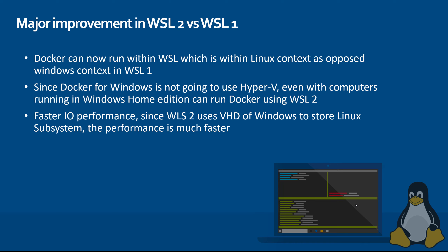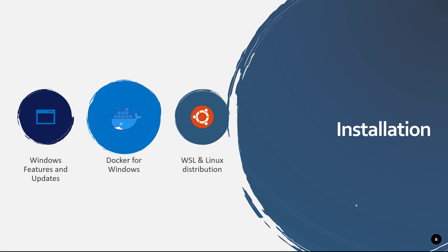Finally, faster IO performance is available in WSL2. Since WSL2 uses a VHD of Windows to store the Linux subsystem, performance is much faster. You can literally see how fast it downloads packages from online, extracts them, and installs applications within WSL itself. The installation part of WSL2 is very straightforward if you have a Windows 10 machine — home or professional edition.